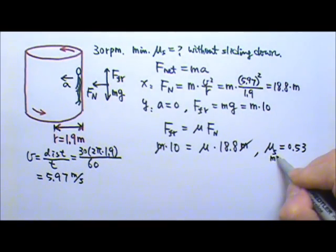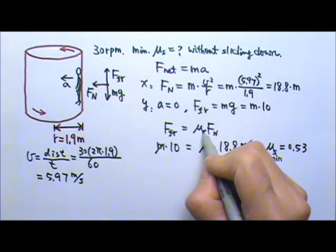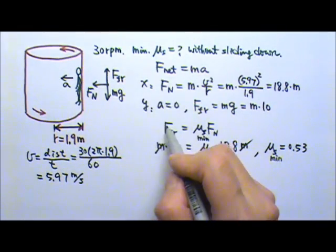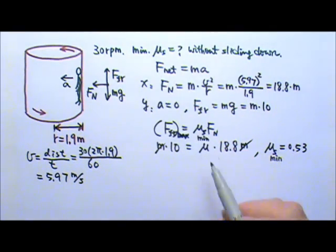And this is the minimum mu_S. Now over here I didn't write it down, but we're looking for a minimum mu_S. It means if the mu_S is the minimum value, we must be using the maximum possible friction for that mu_S. That's why this works.